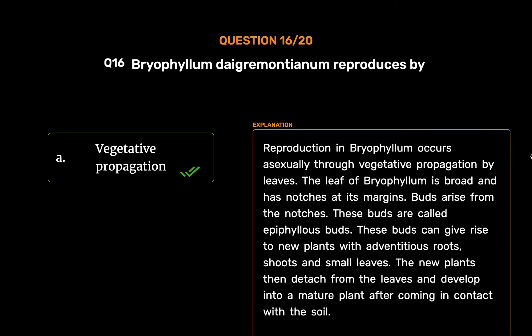Reproduction in Bryophyllum occurs asexually through vegetative propagation by leaves. The leaf of Bryophyllum is broad and has notches at its margins. Buds arise from the notches — these buds are called epiphyllous buds. These buds can give rise to new plants with adventitious roots, shoots and small leaves. The new plants then detach from the leaves and develop into a mature plant after coming in contact with the soil.